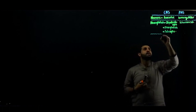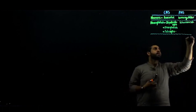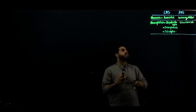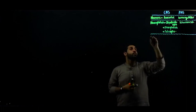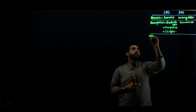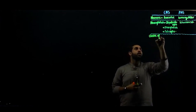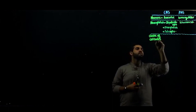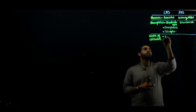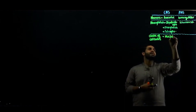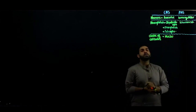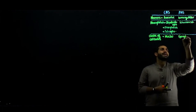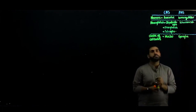In CNS, clusters of cell bodies are present. We give these clusters of cell bodies the name 'nuclei.' The same clusters of cell bodies, when found in PNS, are given the name 'ganglia' or 'ganglion.'